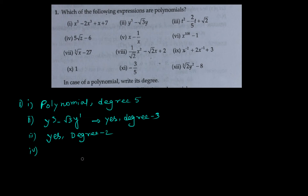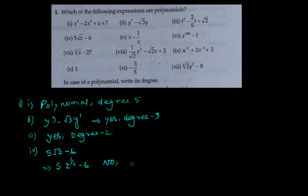The fourth one is 5 times the square root of z minus 6. If I convert the root z into a power, it will be z to the power one-half minus 6. We can see it's not a polynomial because the variable z has a fractional power. So it's not a polynomial, and as it is not a polynomial, it does not have any degree — only polynomials can have a degree.